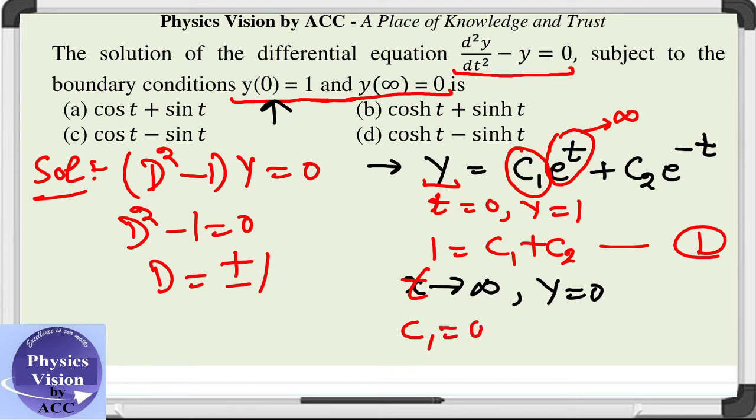So c₁ is equal to 0, and by substituting this value c₁ = 0 here, we got c₂ is equal to 1.